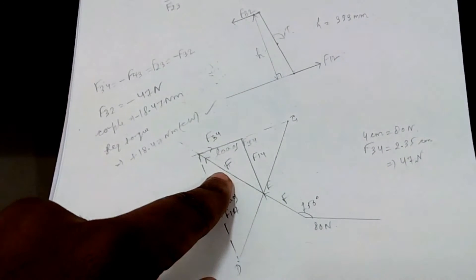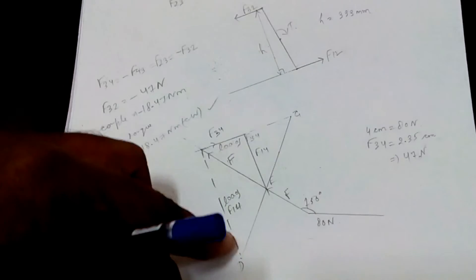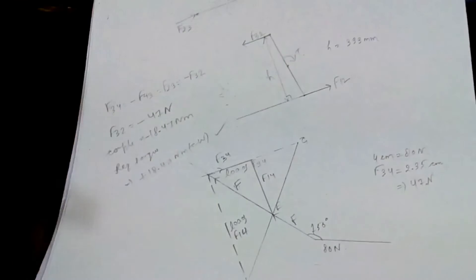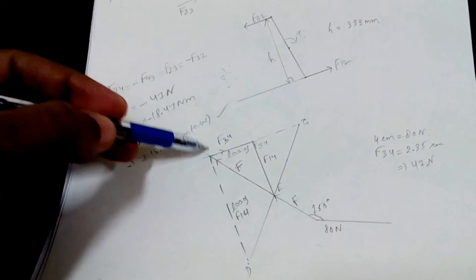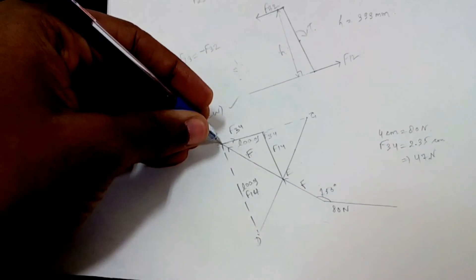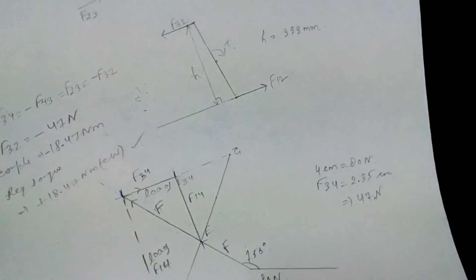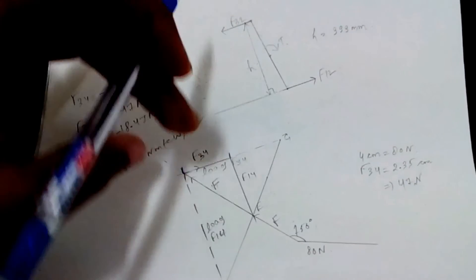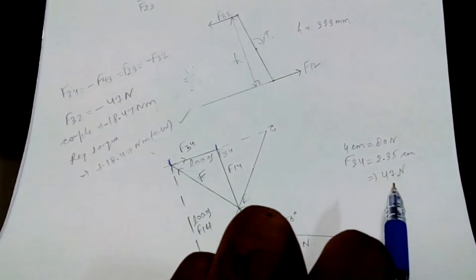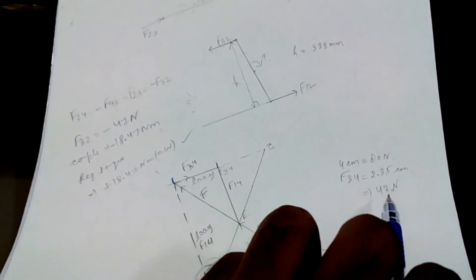Since 80 Newton equals 4 cm, that means 1 cm equals 20 Newton. F34 measures 2.35 cm, so multiplying by 20 gives F34 equal to 47 Newton. F14 need not be found separately since we superimposed the parallel line from E to determine F34 directly from the scale measurement.